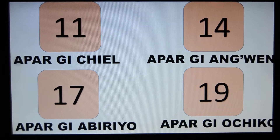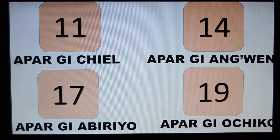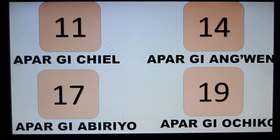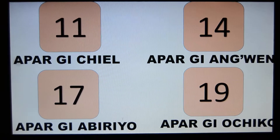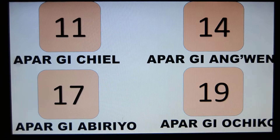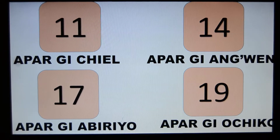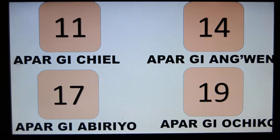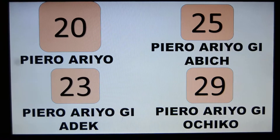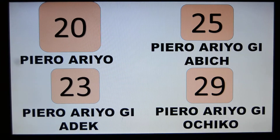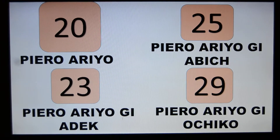Sorry — 11 should be ACHIEL APAR GI ACHIEL, not APAR GI CHIEL APAR GI ACHIEL like I have written there. Moving on to the next set, which is the 20s, you look at PIERO ARIO.